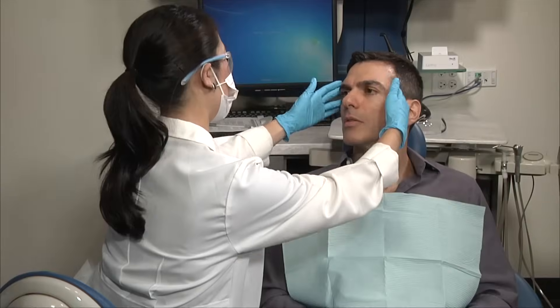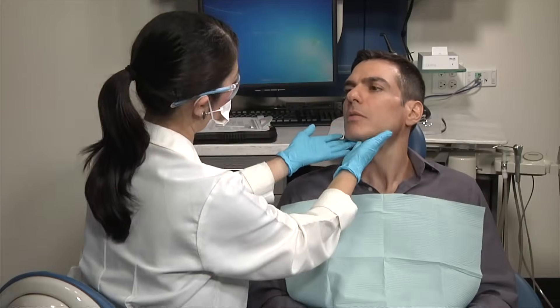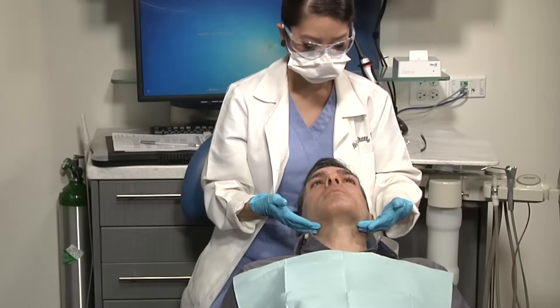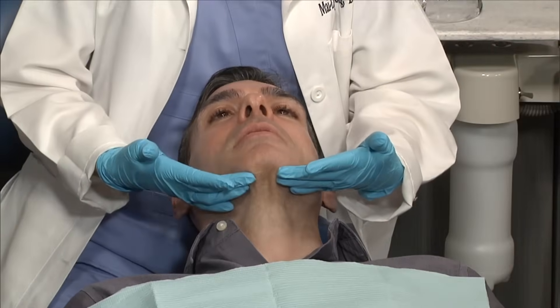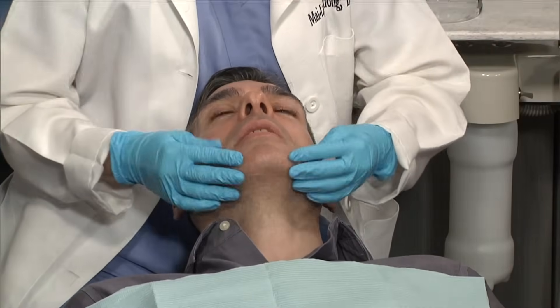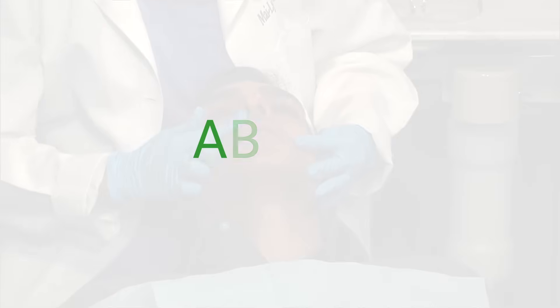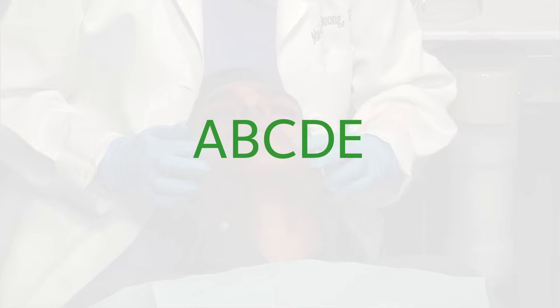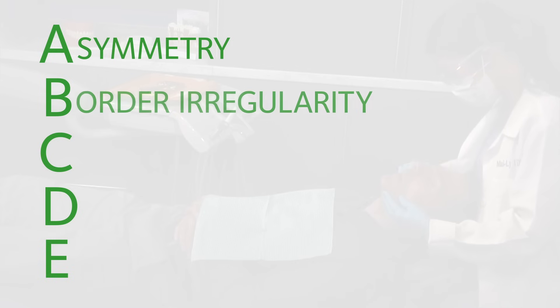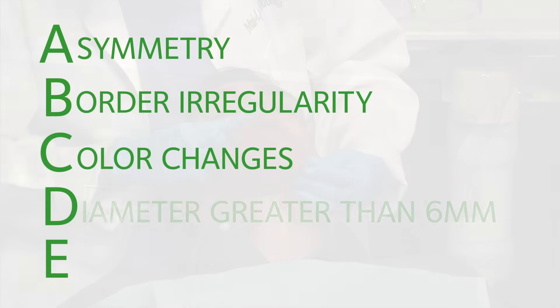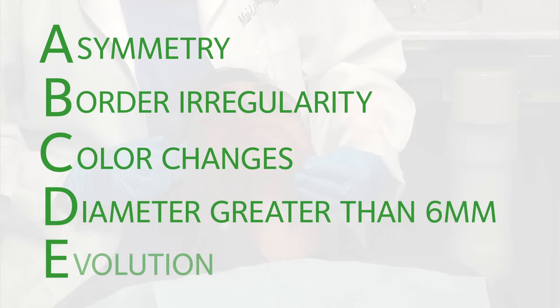Begin the extraoral exam by examining the head and face from both the front and back, taking note of any asymmetries and the presence of pigmented lesions. For such lesions, use the American Cancer Society's ABCDE rule to assess for melanoma risk: look for asymmetry, border irregularity, color changes, diameter greater than 6 millimeters, and evolution of the lesion over time.